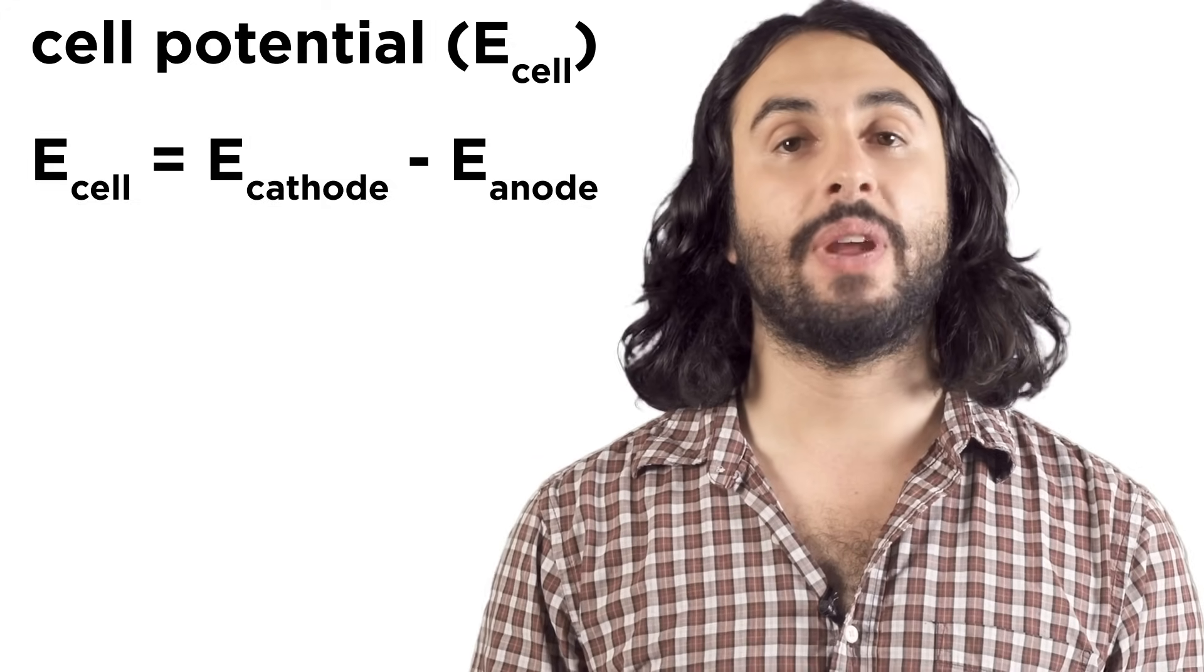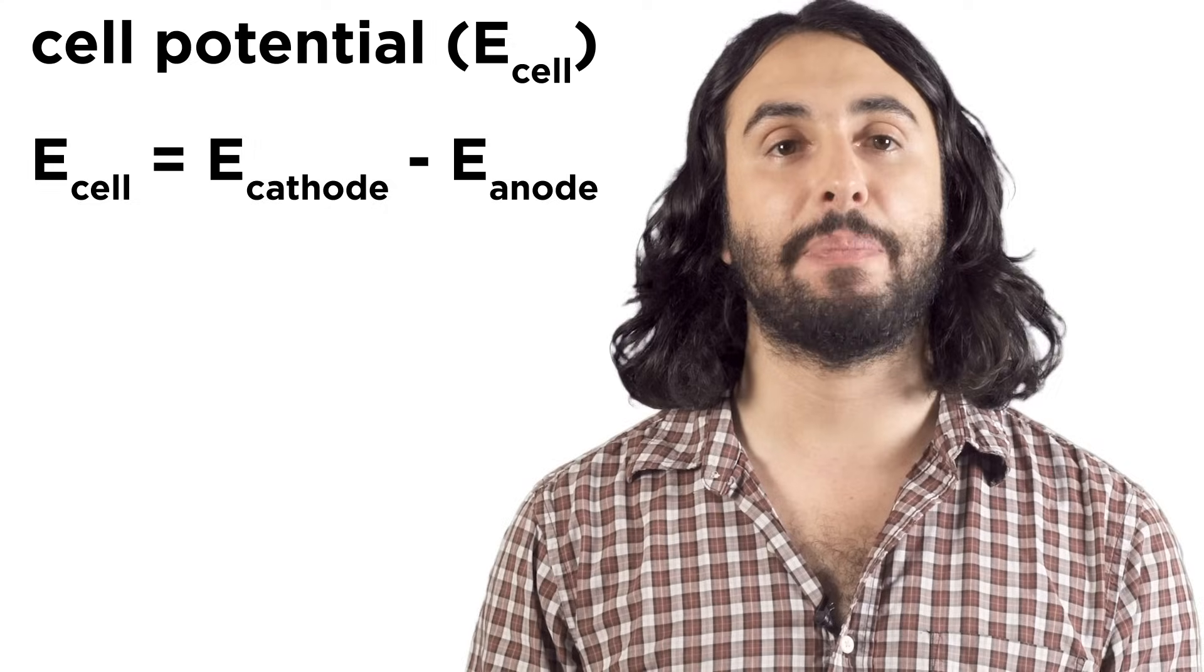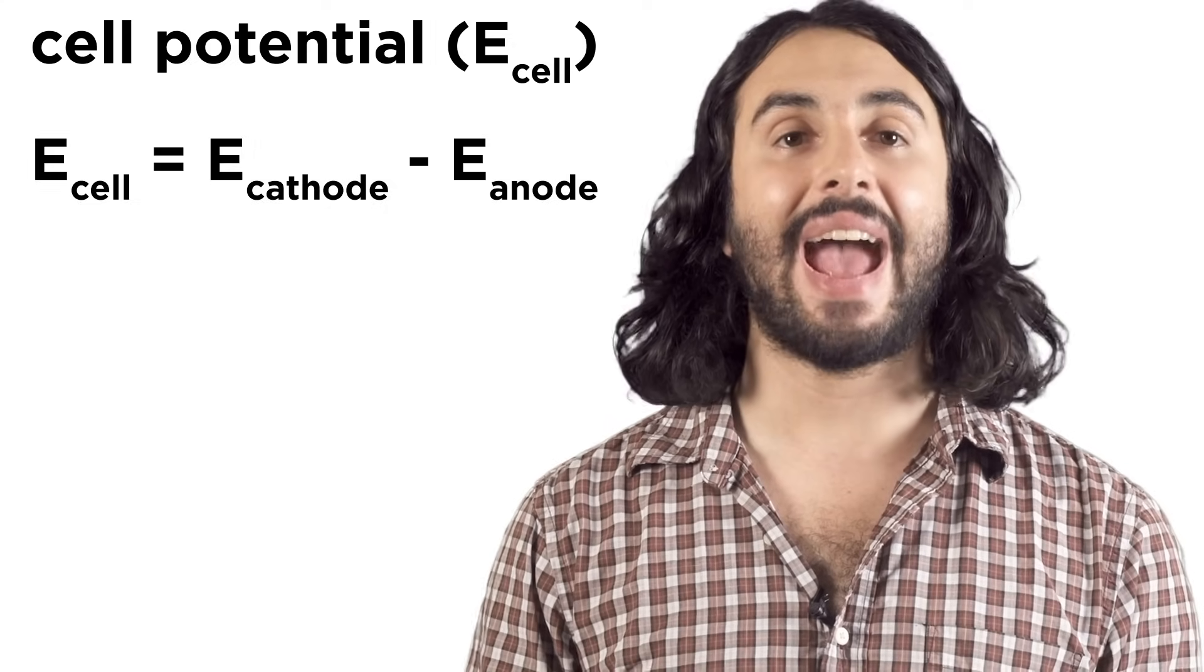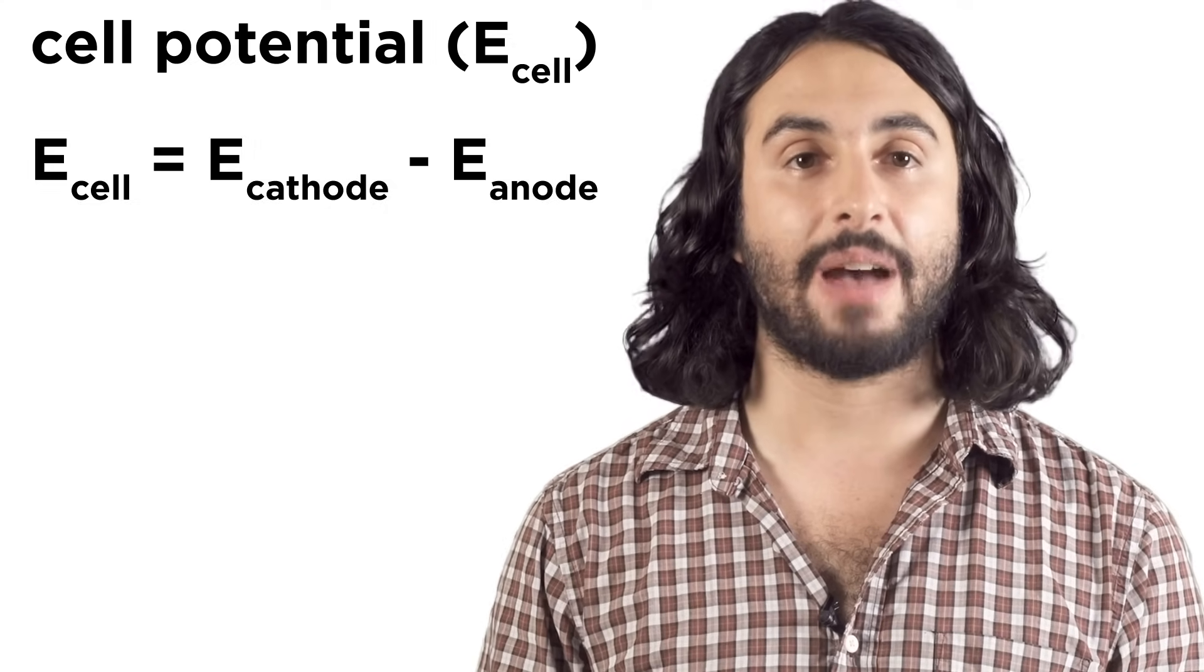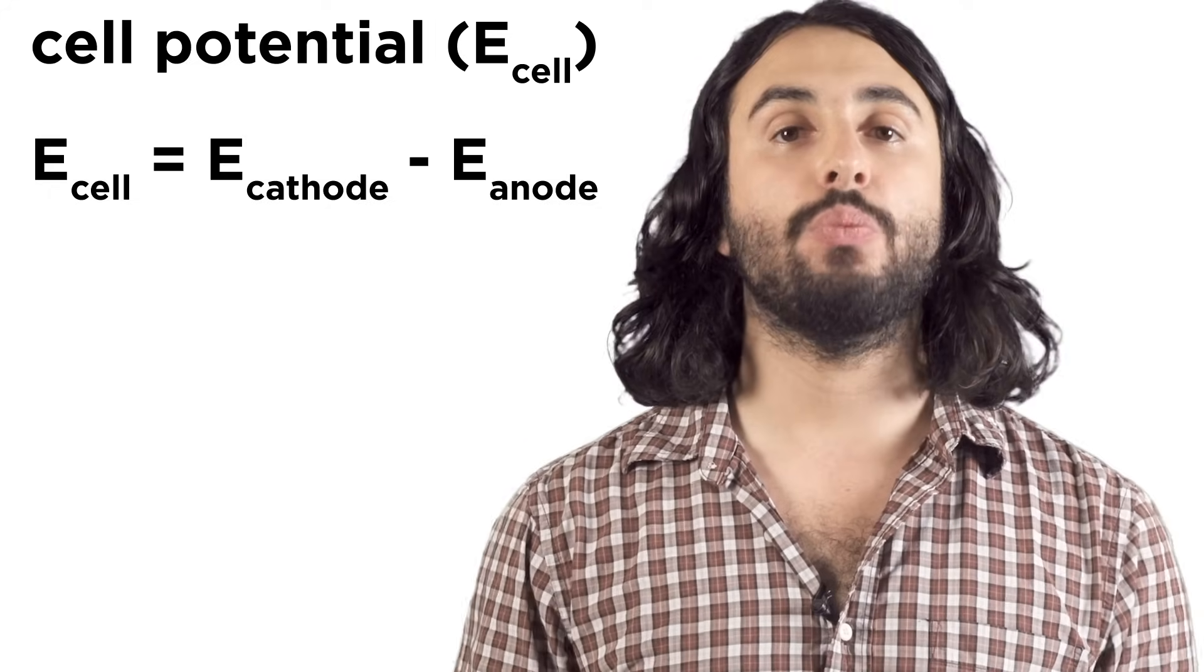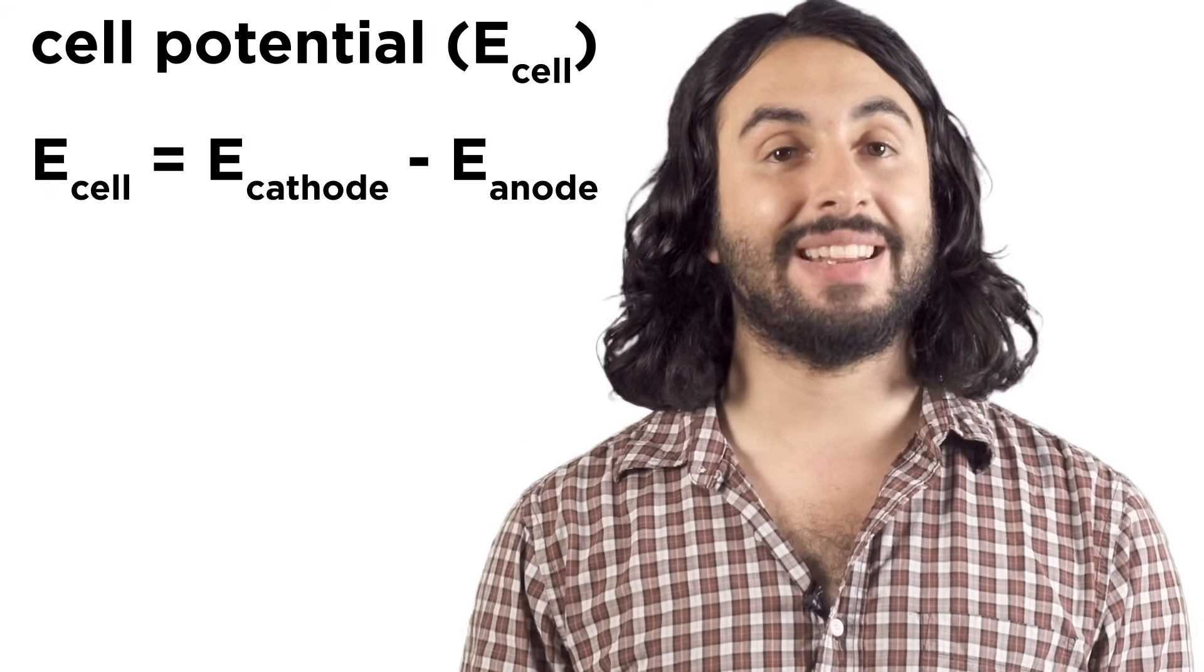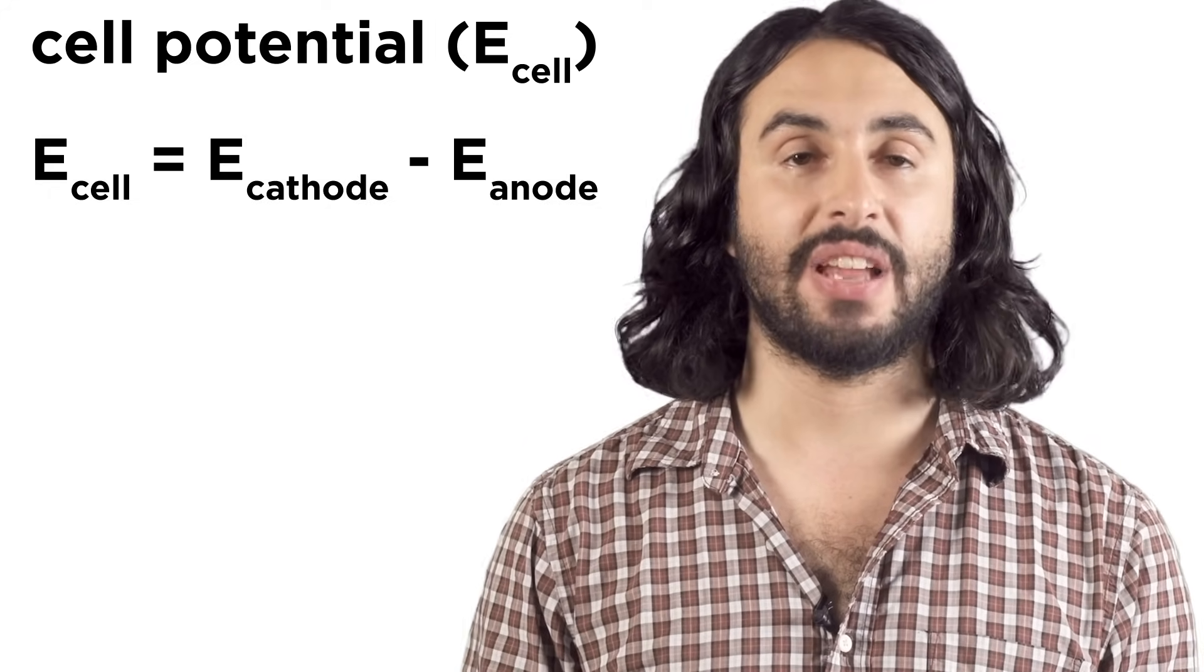The E-cell for a voltaic cell will be E-cathode minus E-anode, because we are measuring the reduction that happens at the cathode and then adding the reduction that could happen at the anode, but reversing the sign because it is actually oxidation that is taking place.